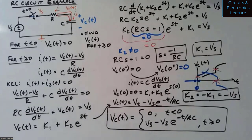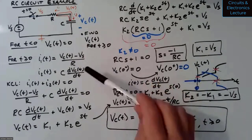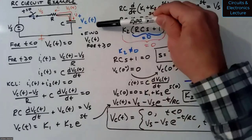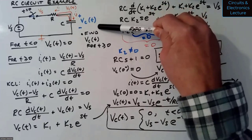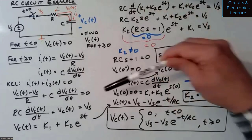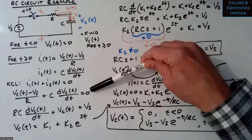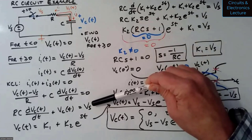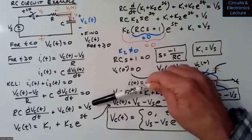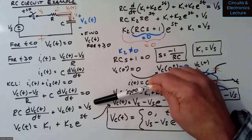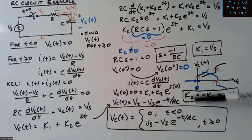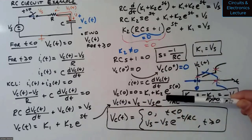The other circuit would be an RL circuit and we'll work an example there too. If the circuit looks different, the differential equation you derive is circuit-specific — but the general form of the solution K1 plus K2 e to the ST always works for any first-order circuit. The circuit-specific equation is what changes.